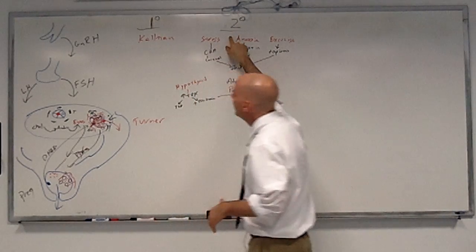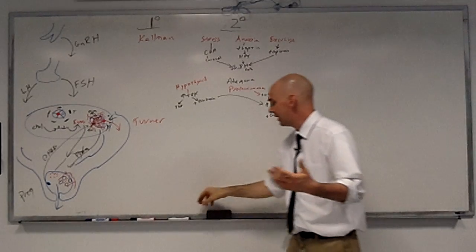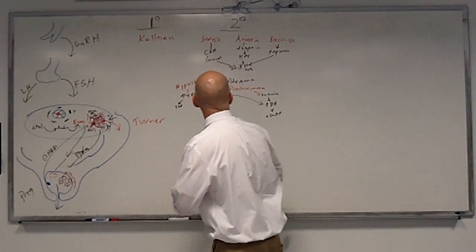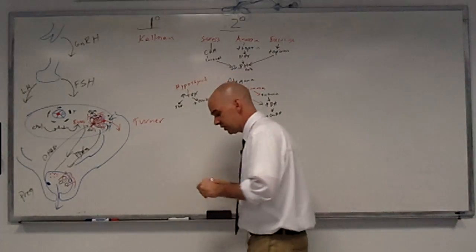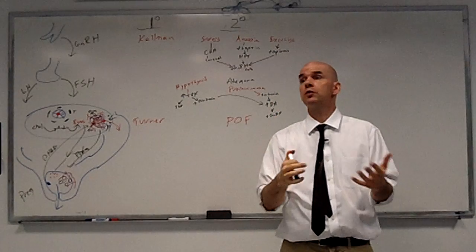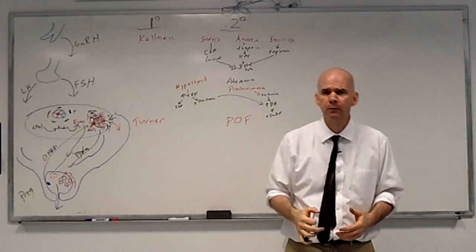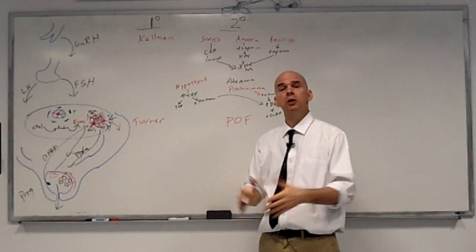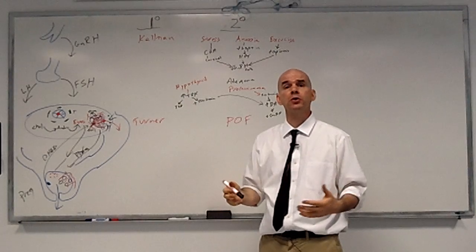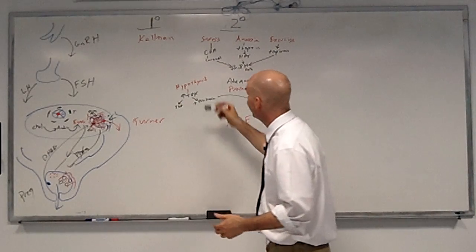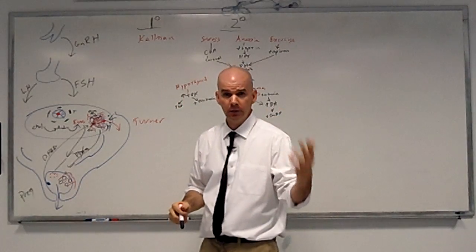As far as ovarian causes of secondary amenorrhea, the main thing, of course, we're looking at is premature ovarian failure. This is just maybe the ovaries running out of follicles before the patient turns 40 or possibly an autoimmune attack on the ovaries so that the follicles are destroyed. So now we're down already to uterine causes of amenorrhea.